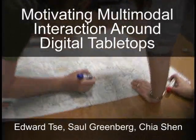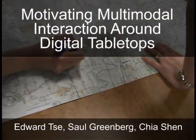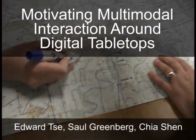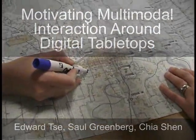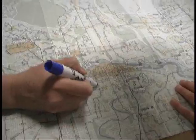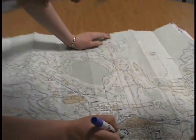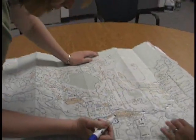People interact over everyday objects, such as paper maps, on large surfaces, such as walls and tables, using a combination of speech and rich hand gestures.